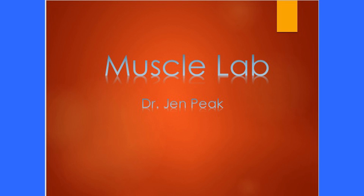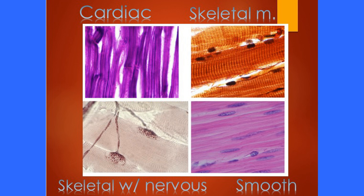Today we're going to discuss muscles. The histology examples include the top left, which is cardiac muscle — found only in the myocardium of the heart. It's unique in shape and has striations; it's intermediate when it comes to fatigue and contraction. Skeletal muscle is very quick to contract and also very quick to fatigue. It has striations, and the dark circles are nuclei.